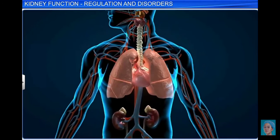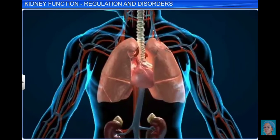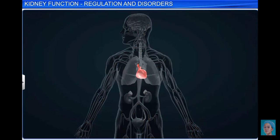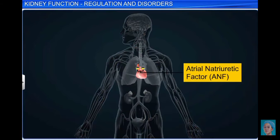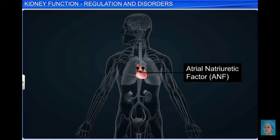Apart from the hypothalamus and JGA, the heart also regulates the functioning of the kidneys to a certain extent. The muscles of the heart release atrial natriuretic factor, or ANF, when the blood pressure in the atria increases. ANF, a peptide hormone, is a vasodilator and also a diuretic that dilates the blood vessels and helps to decrease the blood sodium and water levels. It exhibits an inhibitory effect on the renin-angiotensin mechanism.